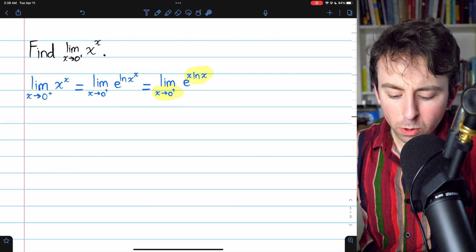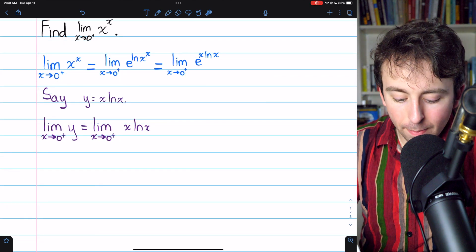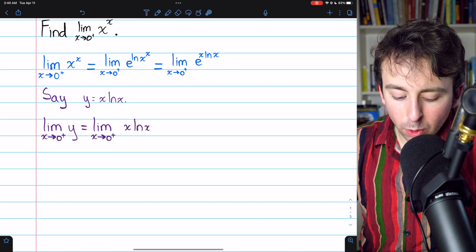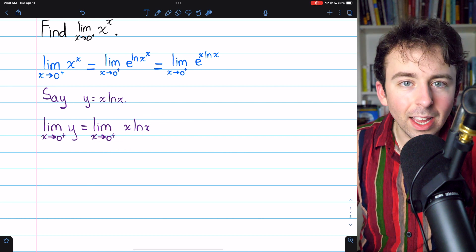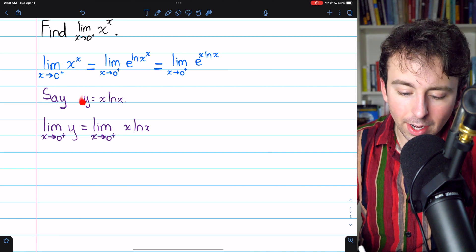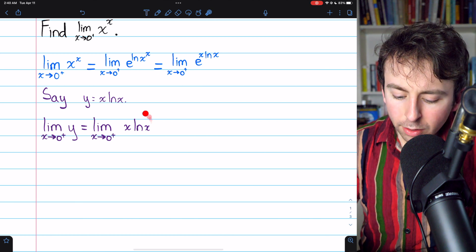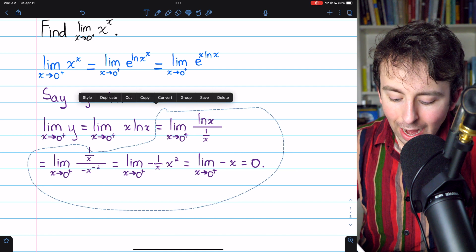What does x ln x approach as x approaches 0 from the right? So, let's give x ln x a name. We'll call it y. Then we're looking for the limit of y as x approaches 0 from the right, which, of course, is the limit of x ln x as x approaches 0 from the right. It's just going to be convenient later to have a nice name. That's why we're calling it y. Now, we could use L'Hôpital's rule here, potentially, but we're going to need to write x ln x as a fraction.